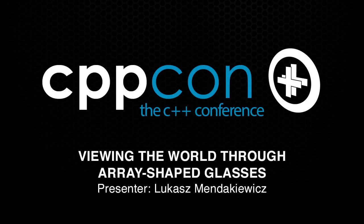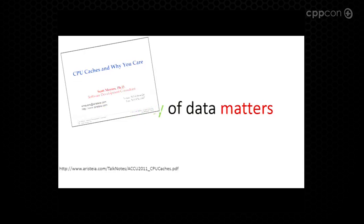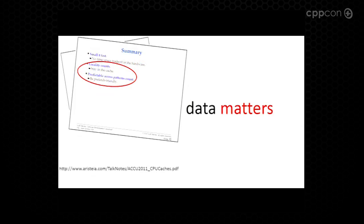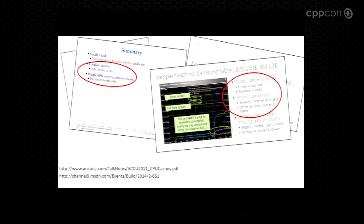If you've attended or watched one of the C++ conferences in recent years, you might have heard the statement that contiguity of data matters. That's what I'll base my talk on. A few quotes from the C++ luminaries: Scott Meyers said locality counts, predictable access patterns count. Herb Sutter in his Modern C++ talk said access patterns matter, linear is better.